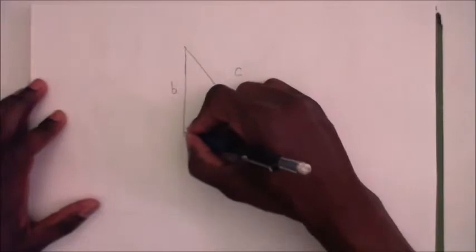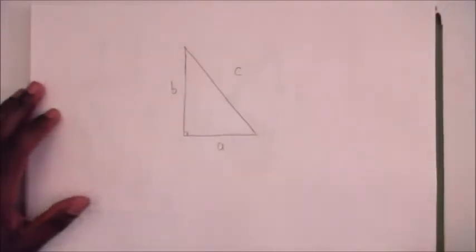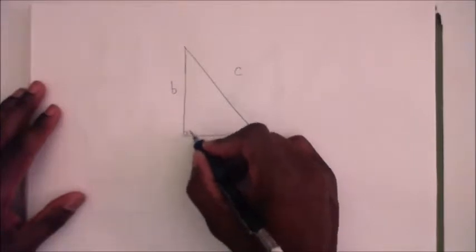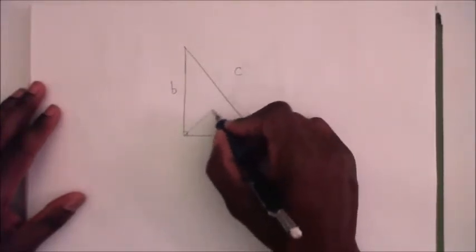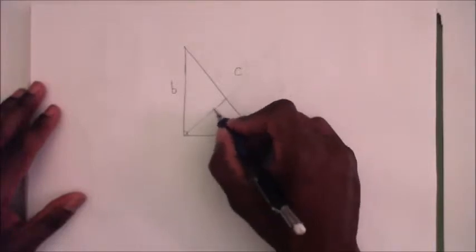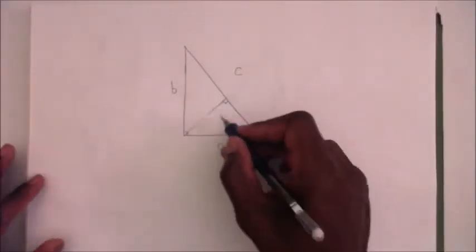Then we'll call the shortest side A and the side B, and this is our right angle. Now to take a closer look at it, we're going to go ahead and divide this triangle into two right triangles.